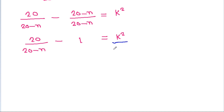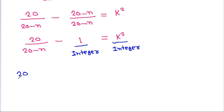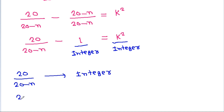Since k squared is an integer and 1 is an integer, that means 20 divided by (20 minus n) must be an integer. That means (20 minus n) must be a factor of 20.